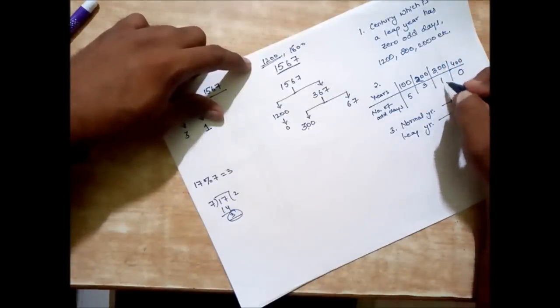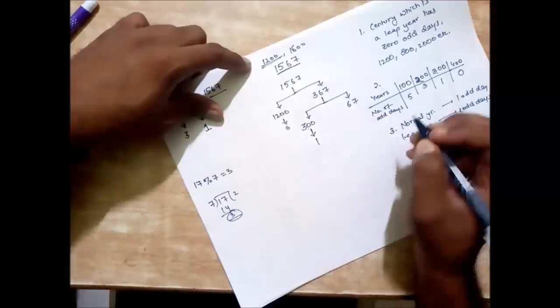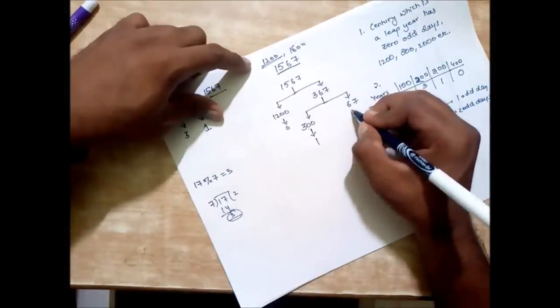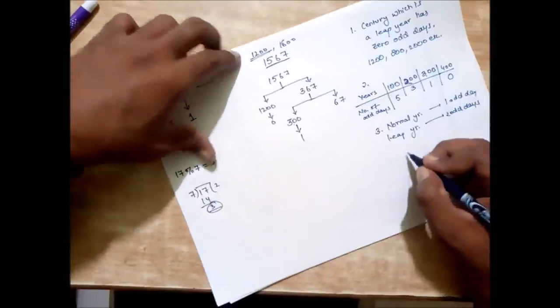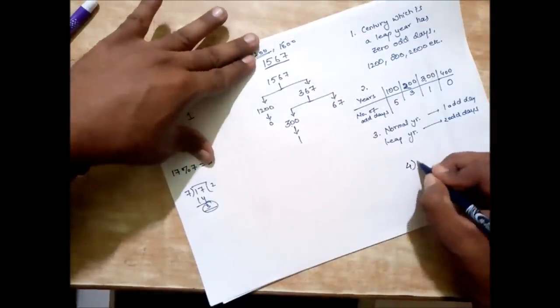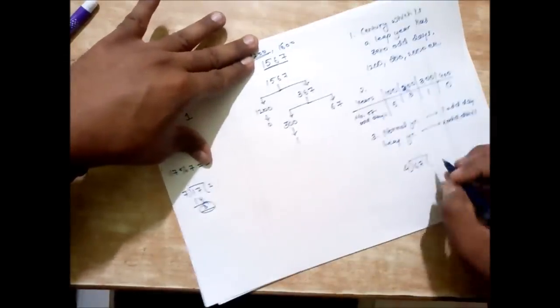For 300 we have 1. And for 67 we need to divide: how many leap years are there in 67? So we divide it by 4 to find out the number of leap years present in the 67.